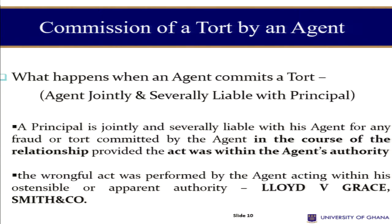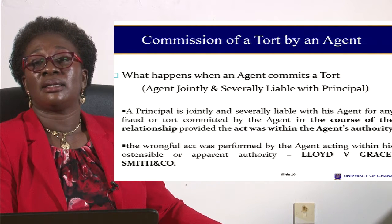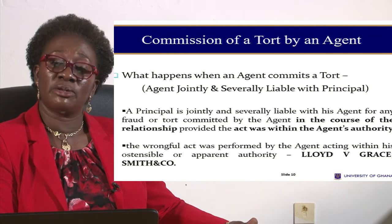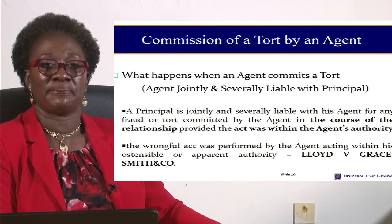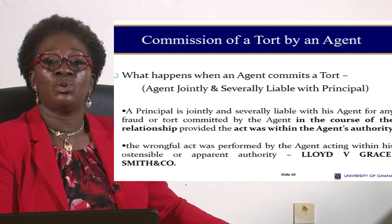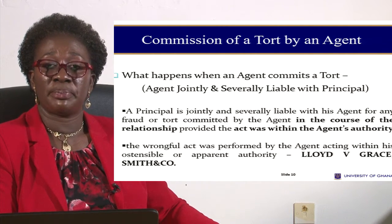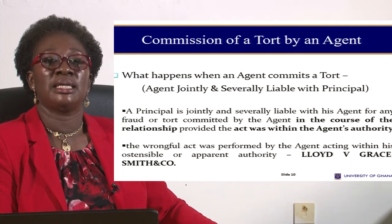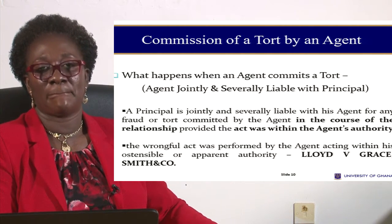There are instances where, in the course of carrying out the instructions of a principal, the agent may cause harm to a third party. For example, a principal gives a catapult or a gun to an agent to sell. Either knowingly or unknowingly, the catapult or gun was faulty. An innocent third party buys it and sustains injury, or sustains injuries in the process of being shown how it works. In such cases, both the agent and the principal will be jointly and severally held liable for the harm caused to the third party.